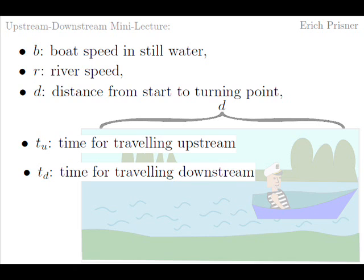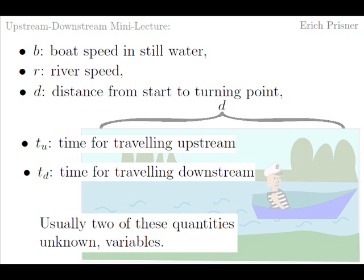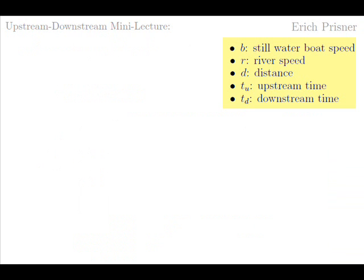Typically three of these quantities are given. They are known and constants. The other two quantities are the variables. How are these quantities related? We know that distance equals rate times time, or that rate equals distance divided by time.